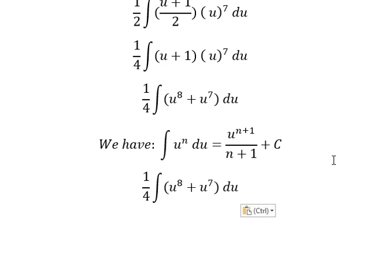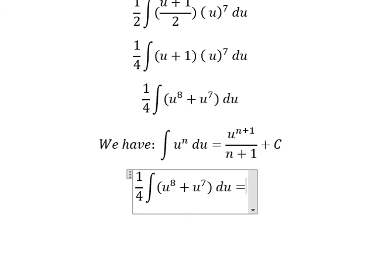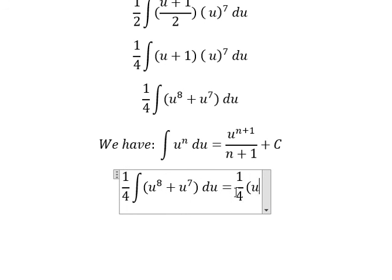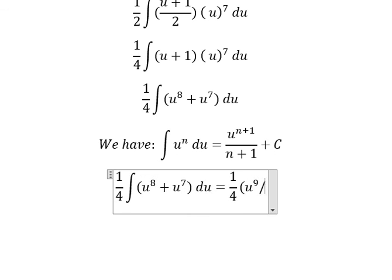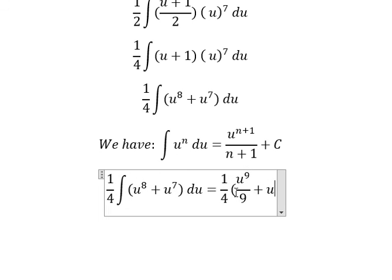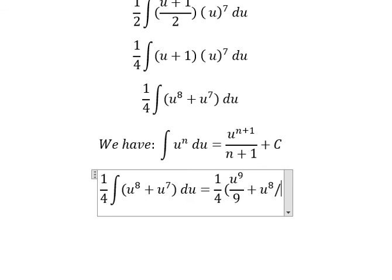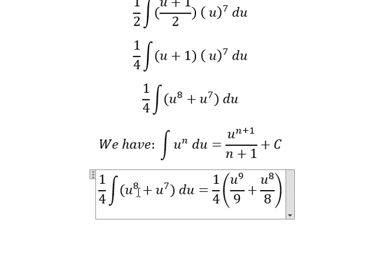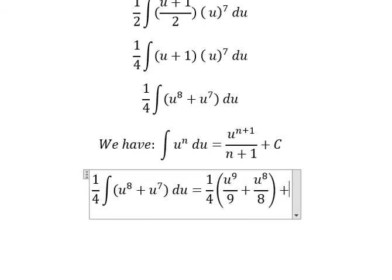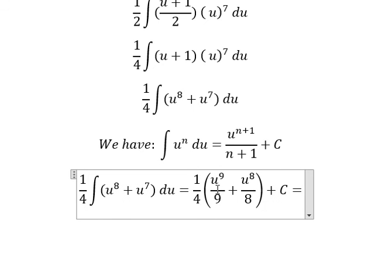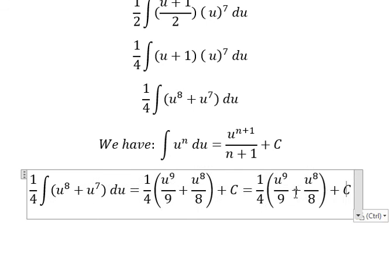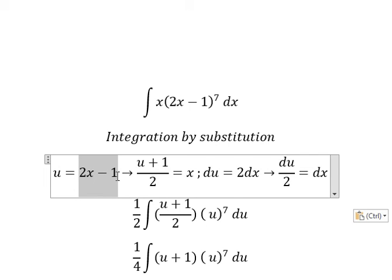That should be u to the power of 9 over 9 plus u to the power of 8 over 8. Because 8 plus 1 you get 9, 7 plus 1 you get 8. And we put C. u is 2x minus 1.